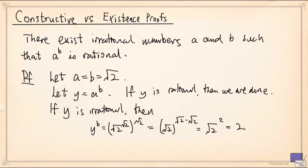And 2 is rational. We have got what we wanted. Now this proof does not exactly tell us how to choose a and b exactly. It only shows you one of these two cases will give us what we want.